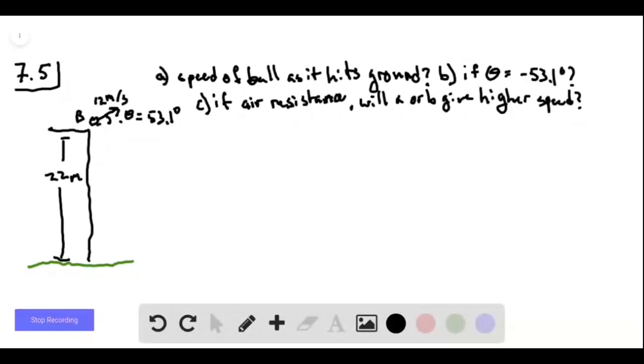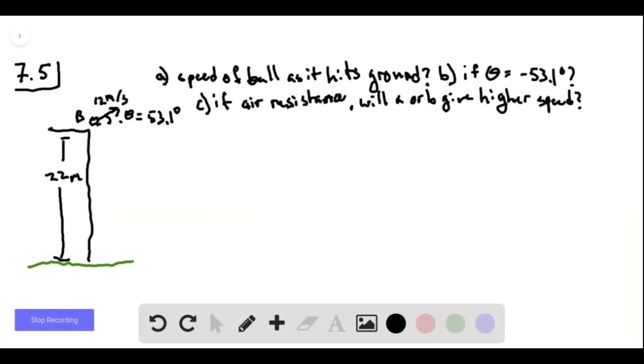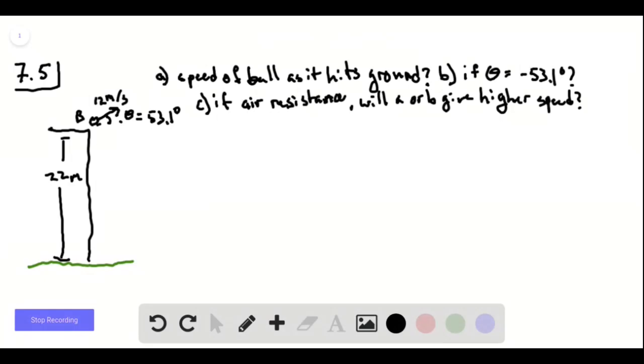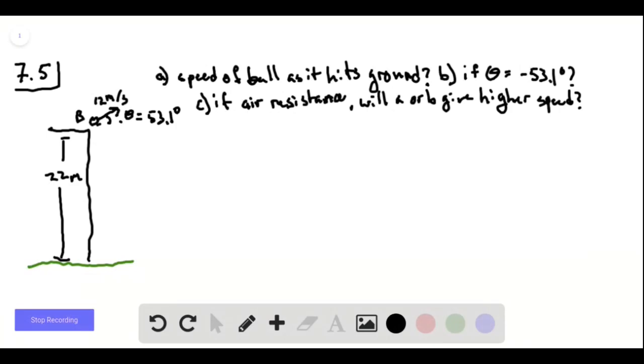It's problem 7.5. We have a baseball being thrown from the top of a building 22 meters off the ground. Its speed is initially 12 meters per second, and is thrown at an angle of 53.1 degrees above the horizontal.